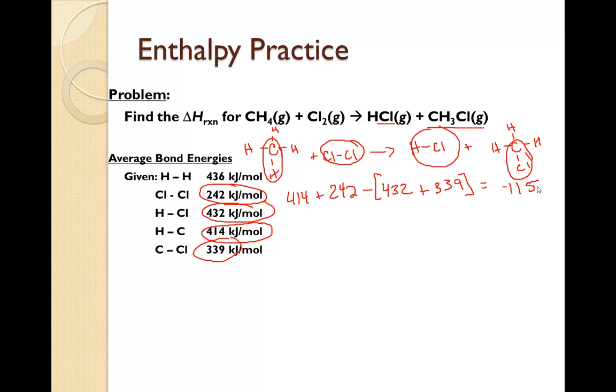There's another way you can do this. It takes a little bit more work, but it might be worth it. You could add up all the bonds total, so we have four CH bonds, which is 414. We have the 242 from the Cl-Cl,